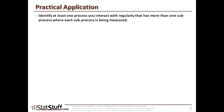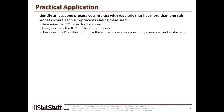Before we close this lesson, let's discuss how we can apply some of these concepts in a practical way. Identify at least one process that you interact with regularly that has more than one sub-process, where each of those different sub-processes are also being measured. Determine the first-time yield for each of those sub-processes, then calculate the rolled throughput yield for the entire process. Ask yourself: how does this rolled throughput yield differ from how the entire process was previously measured and evaluated? And which of those sub-processes is making the greatest negative contribution to the overall rolled throughput yield?